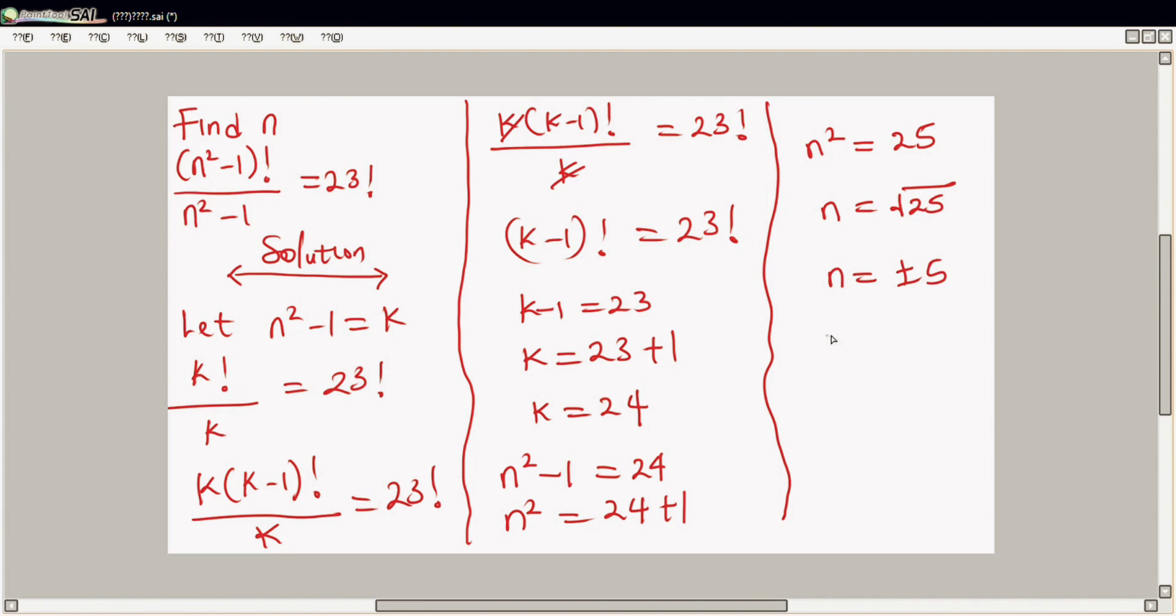So n is equal to 5 or minus 5, but mostly it is better to choose positive when it comes to factorial. So therefore n is equal to 5. As simple as that. Thank you for watching.